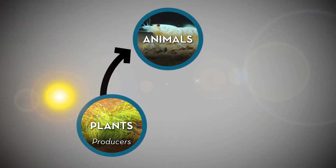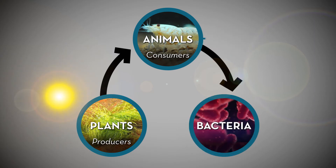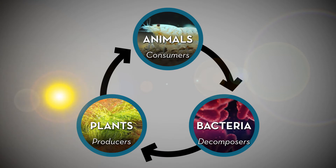Animals that must rely on the digestion of other organisms to survive are called consumers. Depending on their diet, they're categorized as either herbivore, carnivore, or omnivore. Bacteria are decomposers as they break down dead or decaying organisms. Decomposers play an important role in making an ecosystem a cycle as they return nutrients back to the soil for the producers.